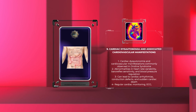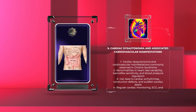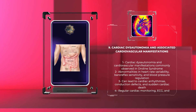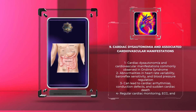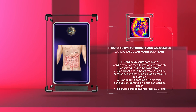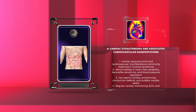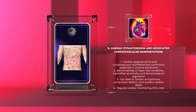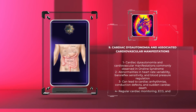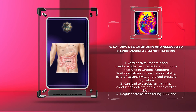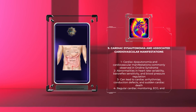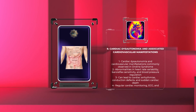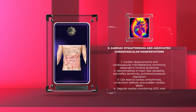Cardiac dysautonomia and associated cardiovascular manifestations are commonly observed in Ondine syndrome. Autonomic dysregulation can manifest as abnormalities in heart rate variability, impaired baroreflex sensitivity, and altered blood pressure regulation. These cardiac dysautonomic abnormalities may lead to arrhythmias, conduction defects, and sudden cardiac death. Regular cardiac monitoring, including ECG and echocardiography, is imperative for detecting and promptly addressing potential cardiac complications.